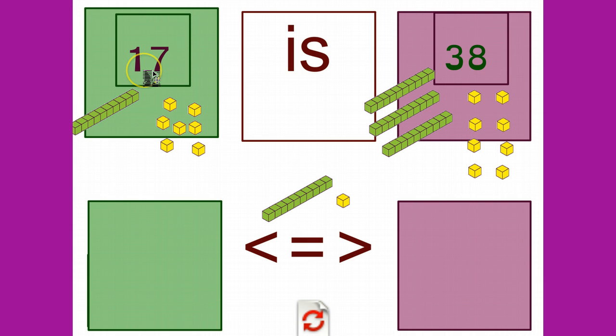because it's our largest place value, we have 1 ten here and 3 tens here. That's different. This is the larger number. So this is going to read, 17 is less than 38,